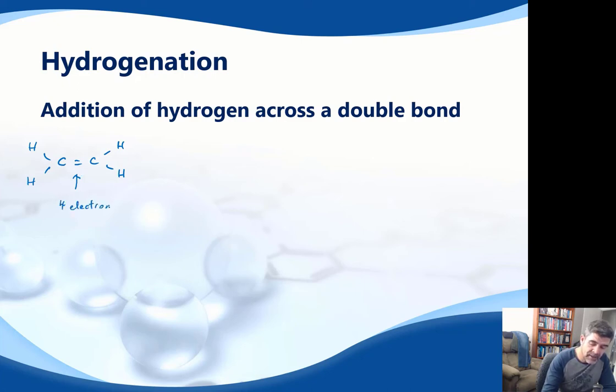Now these four electrons make this region quite reactive, and therefore we can readily add substances across that double bond, break that double bond, and form a new substance.